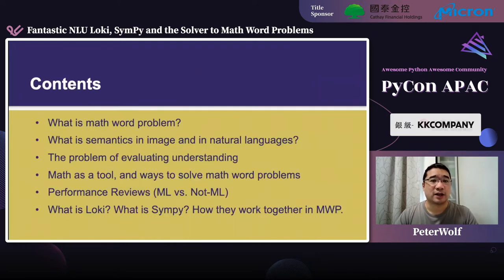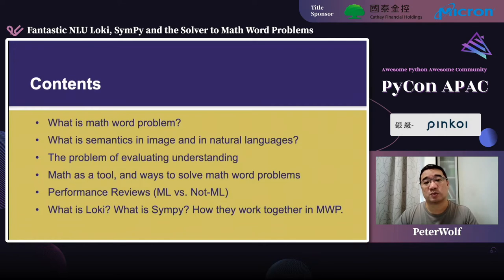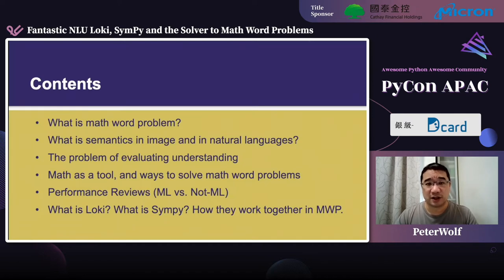In today's talk, I'd like to share with you this information. First, we will talk about what a math word problem is. With this definition, I'll further discuss semantics in image and semantics in natural language. Then we'll come up with a problem of evaluating what understanding is. We will take math as our tool and introduce ways to solve math word problems. We will also do a performance review of machine learning approaches versus non-machine learning approaches. Finally, I'd like to introduce a system we built with LOCKI and SymPy and show you how they work together to solve math word problems.